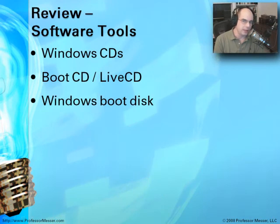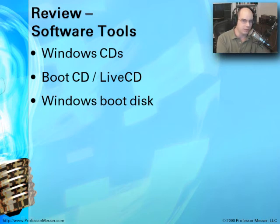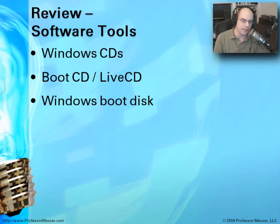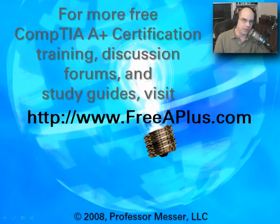In review, there are three types of software tools to have available for preventive maintenance and system work. First, the Windows CD that came with the system, matching the version of Windows in the local environment. Second, boot CDs or live CDs - the Ultimate Boot CD is a great place to start. Third, Windows environments you can boot into from a CD, using either the Microsoft Windows Pre-installation Environment or BartPE. For more A+ certification videos and discussions, visit freeaplus.com.